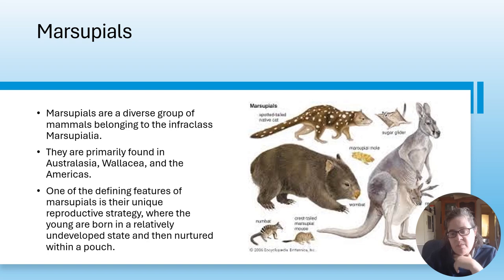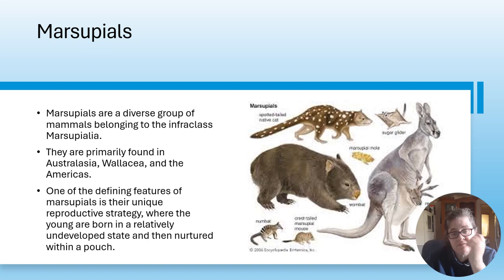We're placental mammals, but kangaroos, wallabies, wombats, koalas and others are marsupials. Marsupials are a diverse group of mammals belonging to the infraclass Marsupialia. They're primarily found in Australia or Australasia, Wallacea, and the Americas. One of the defining features of marsupials is their unique reproductive structure, where the young are born in a relatively underdeveloped state and nurtured within a pouch, because they're born quite small.